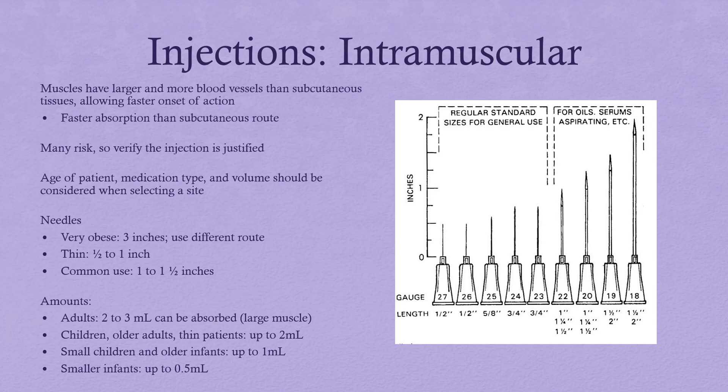We want the appropriate needle length based on patient size and the appropriate gauge based on the viscosity of the medication. A heavier gauge may be needed if the needle must pass through a lot of subcutaneous tissue to penetrate deep muscles. A normal healthy adult can handle up to 5 mLs of medication into one muscle, though we really recommend never giving more than about 3 mLs. In children, don't give more than 2 mLs; in smaller children it's only 1 mL; and infants can go down to half a mL.